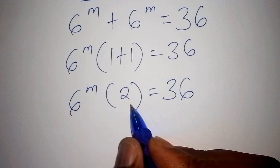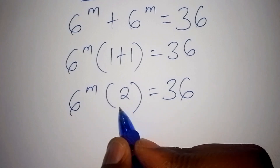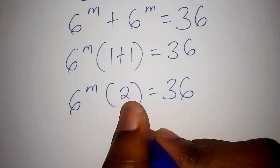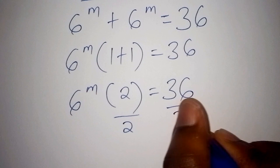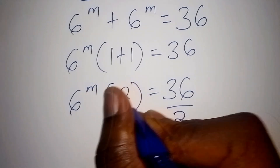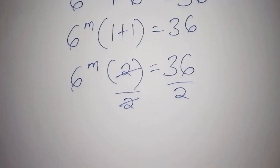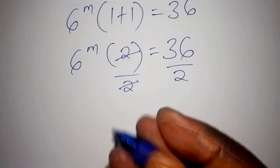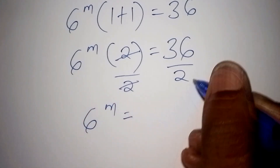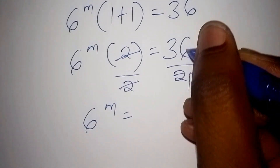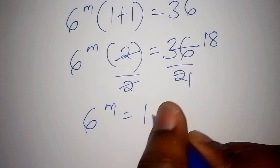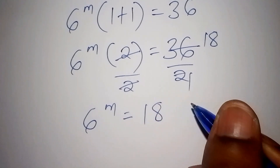Now we divide both sides by 2. This side we divide by 2, and this side also by 2. The 2 and 2 cancel. So now we have 6 to the power of m is equals to 36 divided by 2, which is 18.